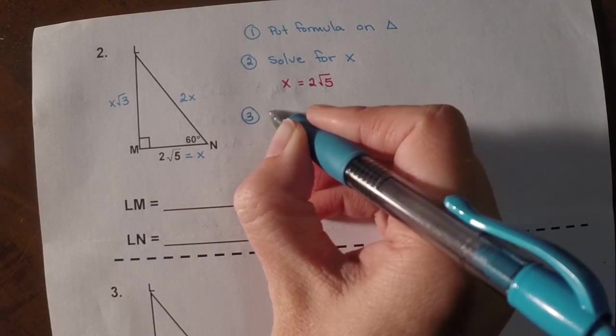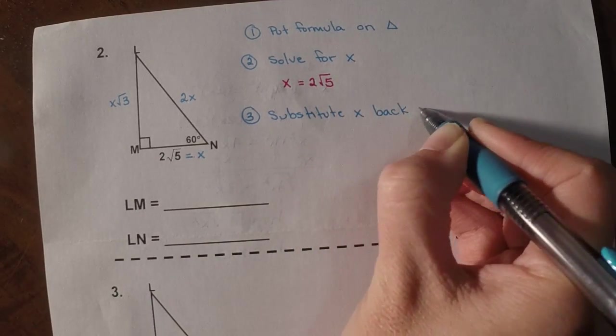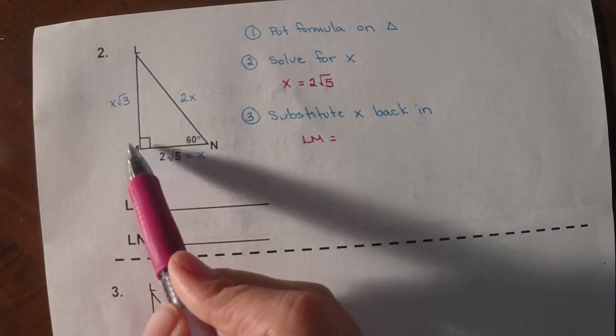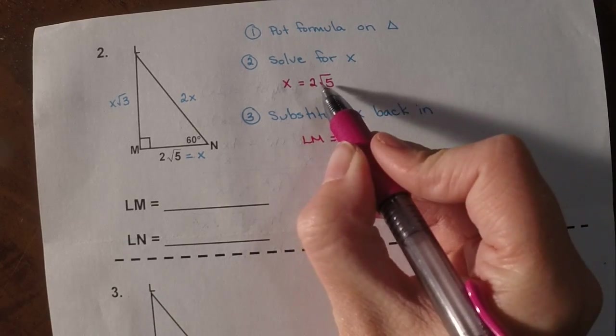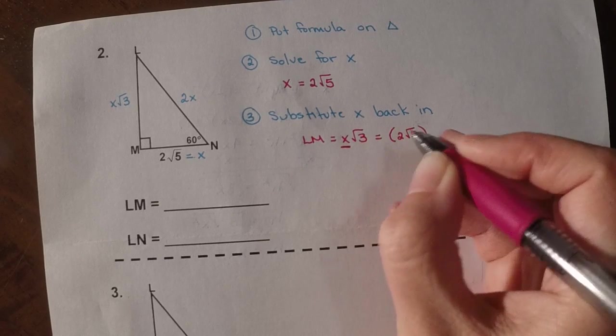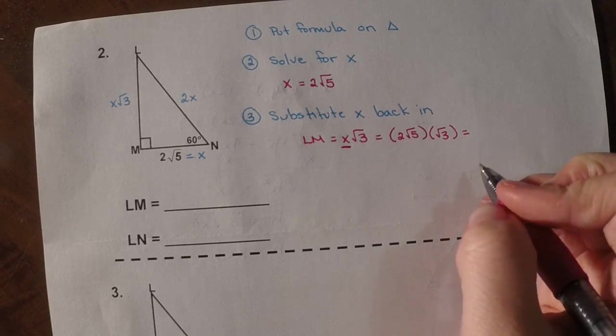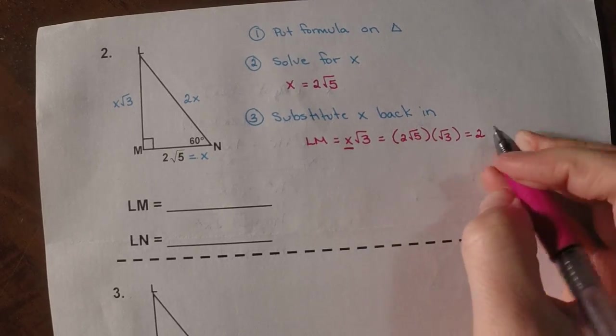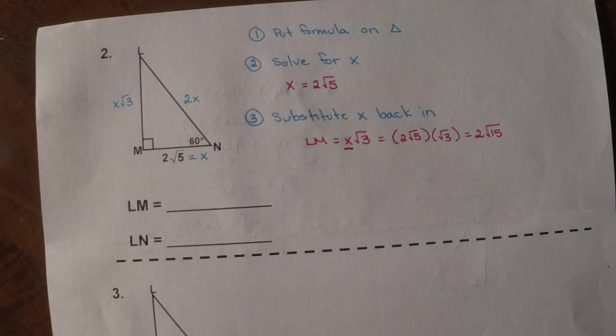So then step 3 is going to be to substitute x back in to find the answers. So again, they ask me for LM. So I'm going to look at the triangle. LM is x root 3. So I have to replace this x with whatever this is. So I'm going to replace x with 2 root 5. That's this. And now I still have root 3. So then if I multiply these two things, 2 is a whole number, so 2 times nothing. So that's 2. And then root 5 times root 3 is root 15. So LM is going to be 2 root 15.